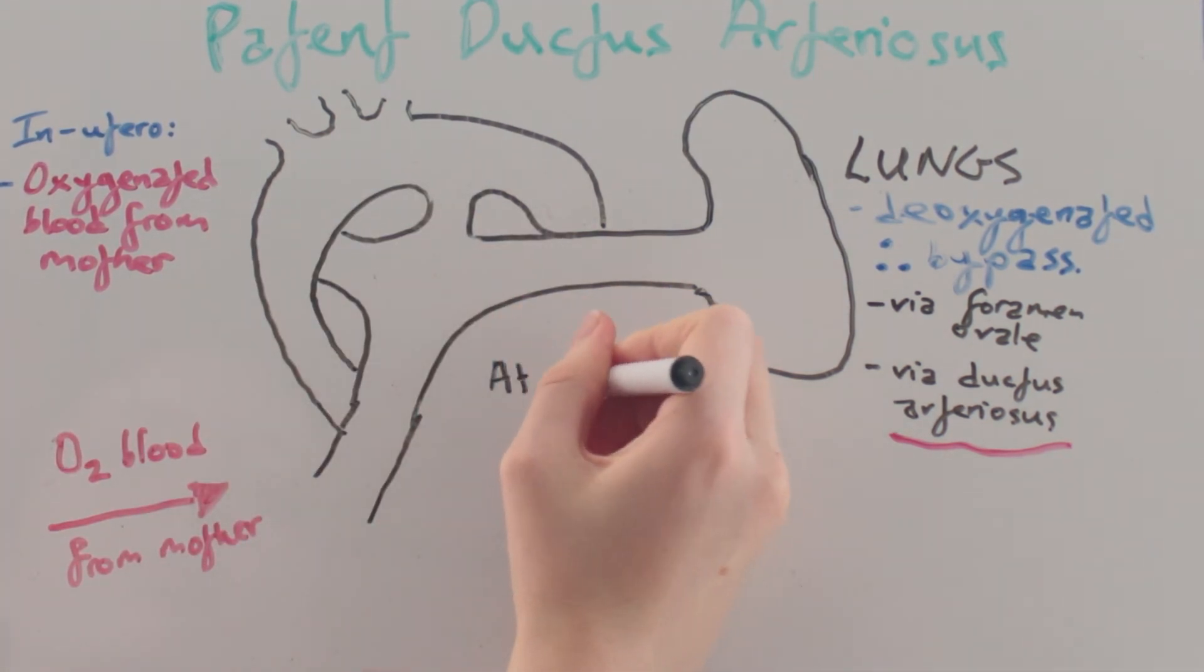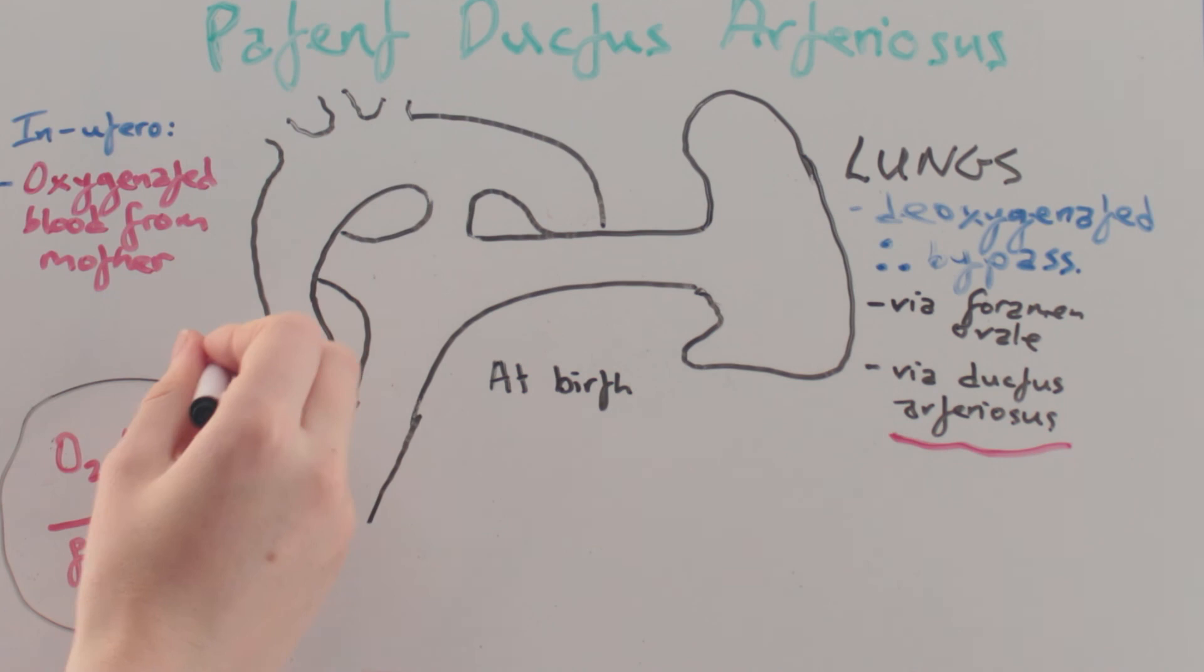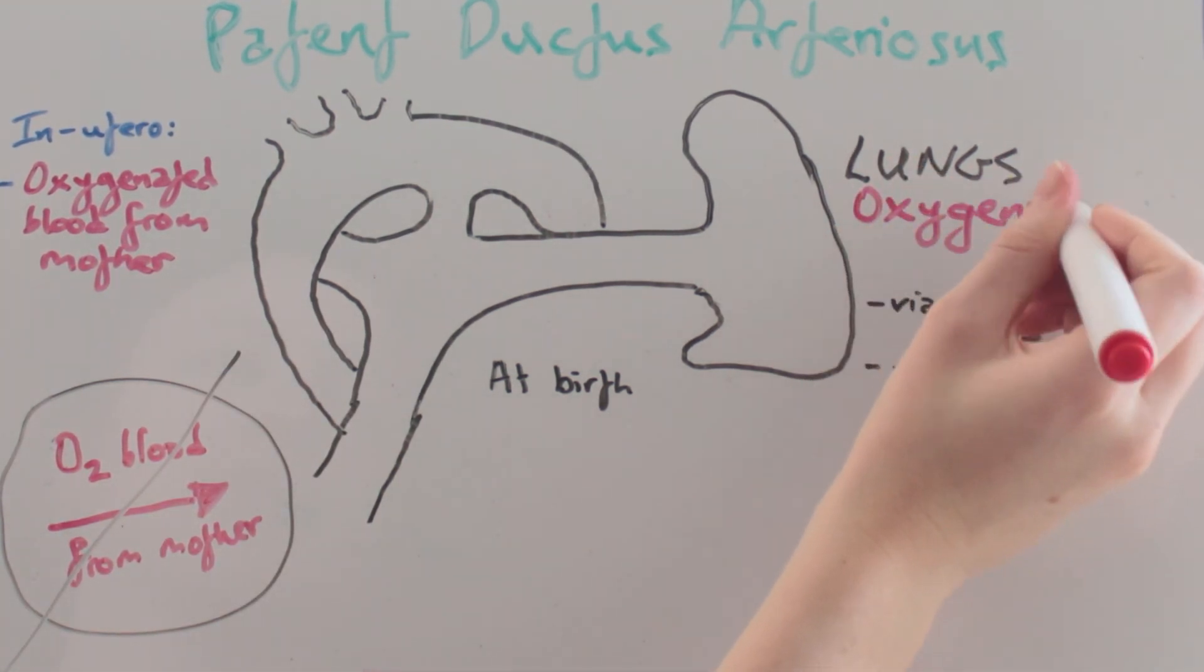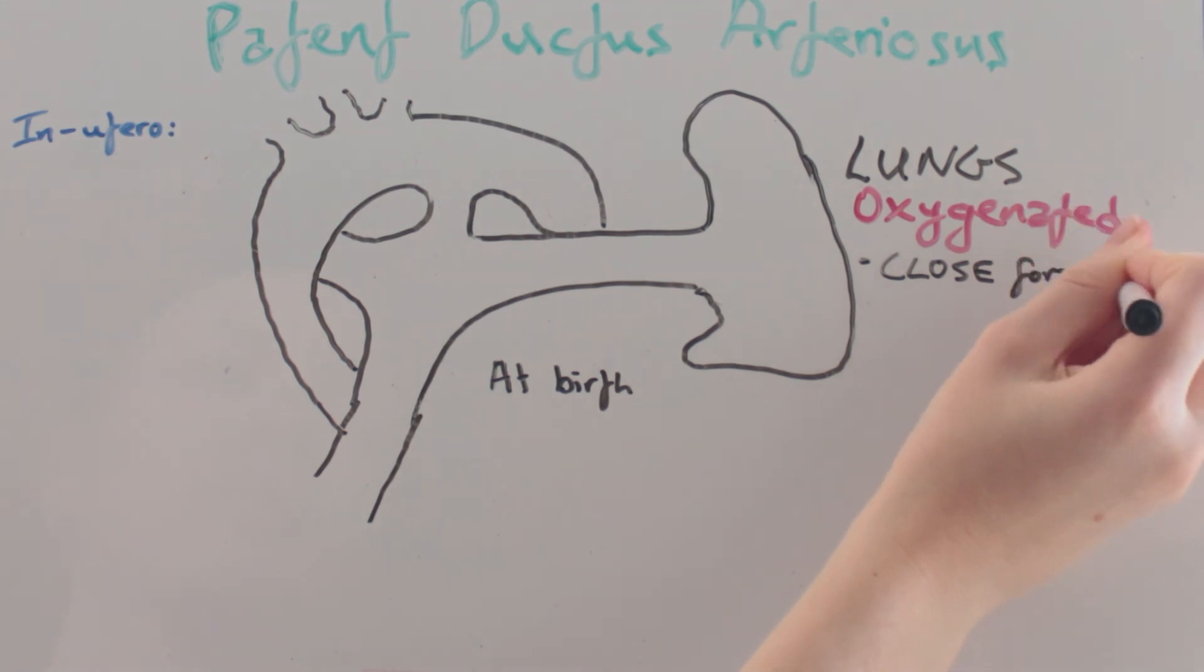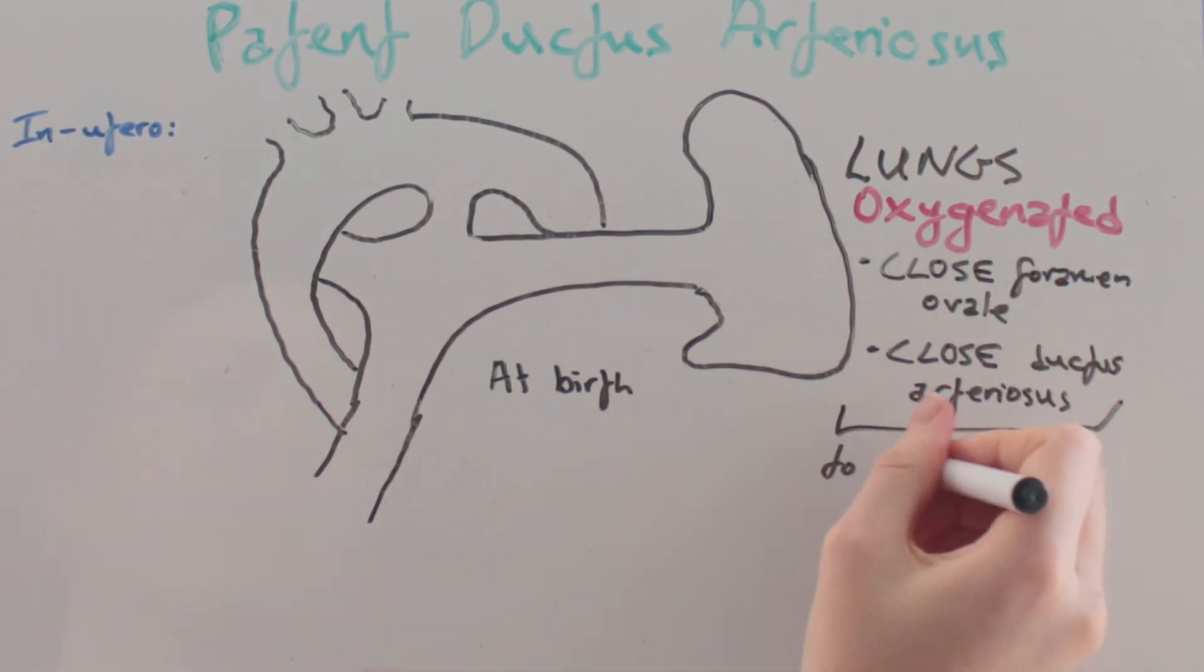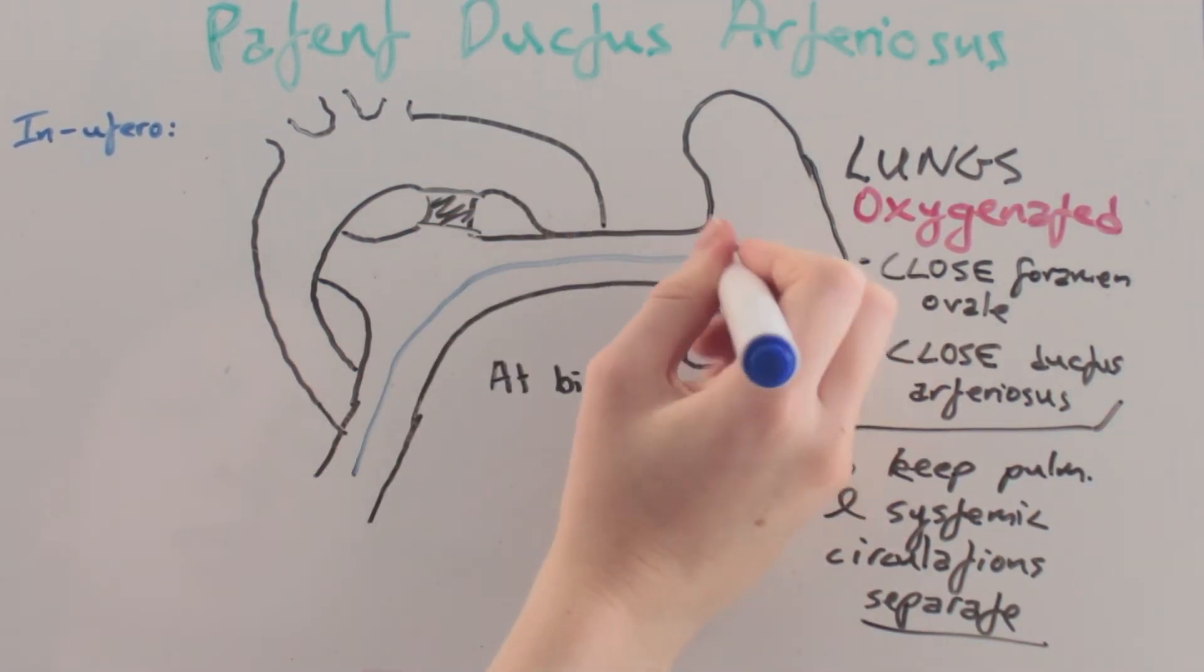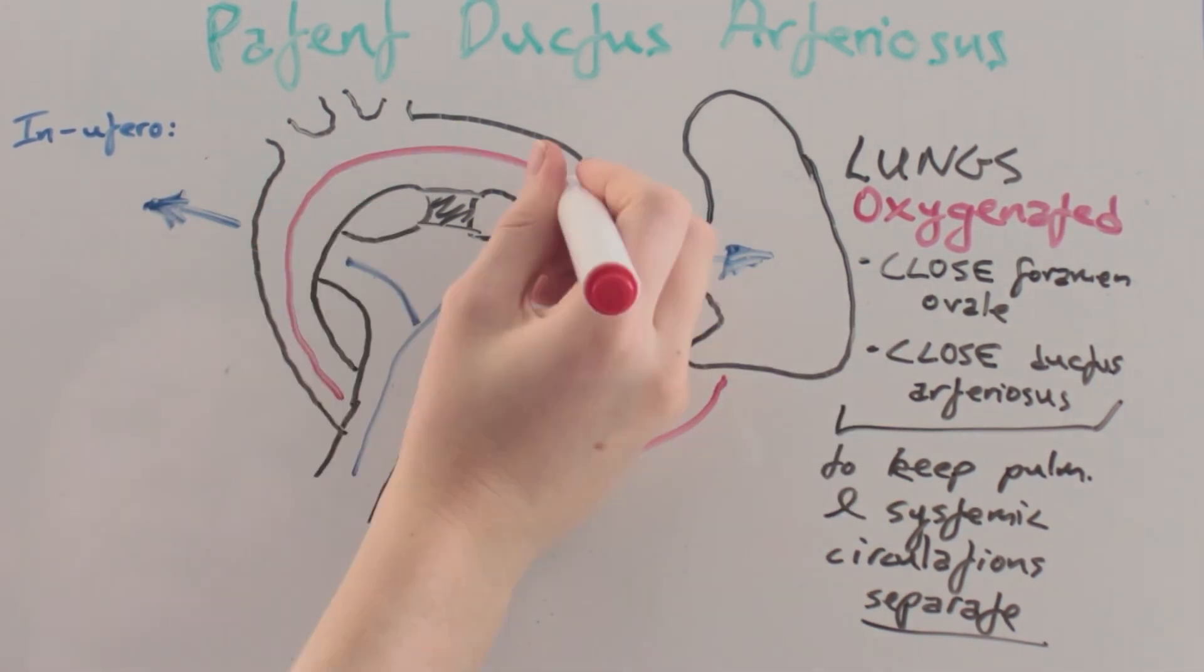At birth the supply of oxygenated blood from the mother ceases. The baby's lungs become oxygenated and normally both foramen ovale and ductus arteriosus will close. This is to keep the pulmonary and systemic circulation separate after birth. Blue blood to the lungs and red blood to the system.